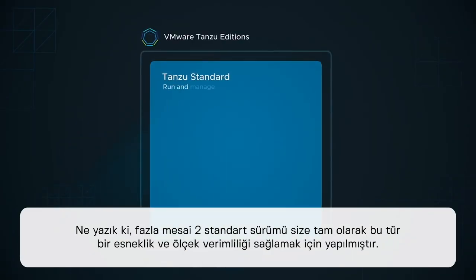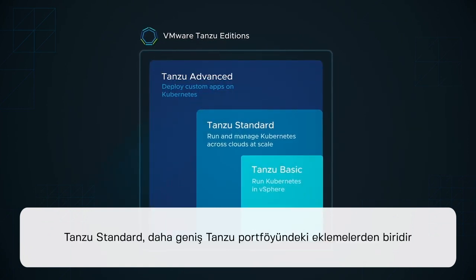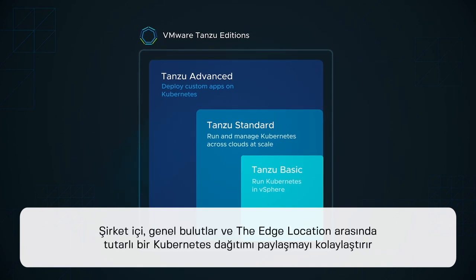Fortunately, VMware Tanzu Standard Edition was made to give you exactly this kind of flexibility and efficiency at scale. Tanzu Standard is one of the editions in the broader Tanzu portfolio. It makes it simple to deploy a consistent Kubernetes distribution across on-premises, public clouds, and edge locations.